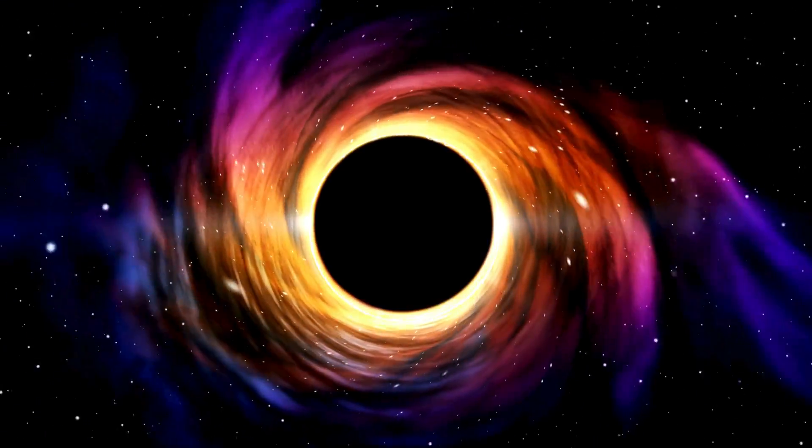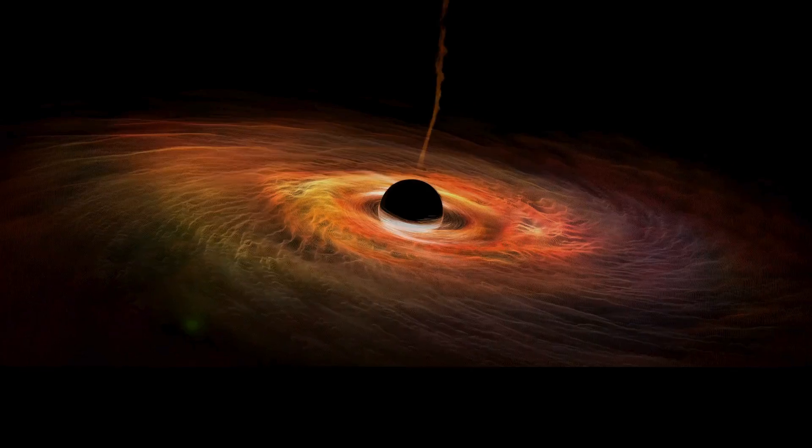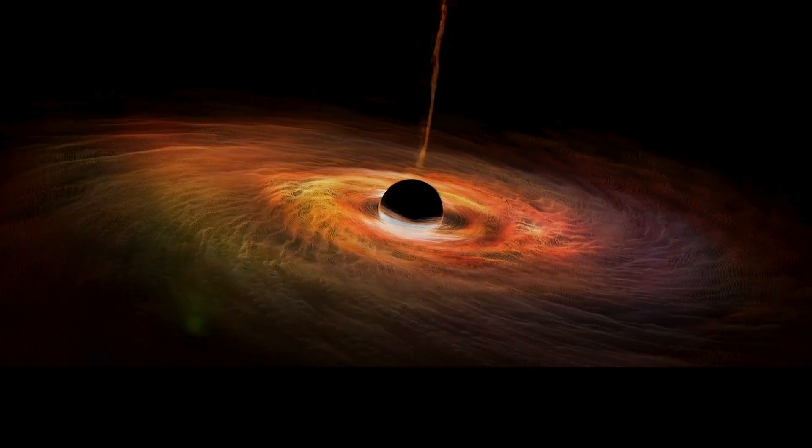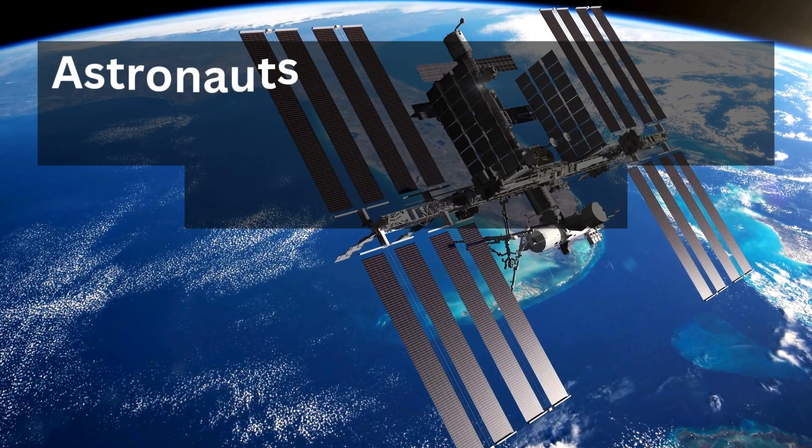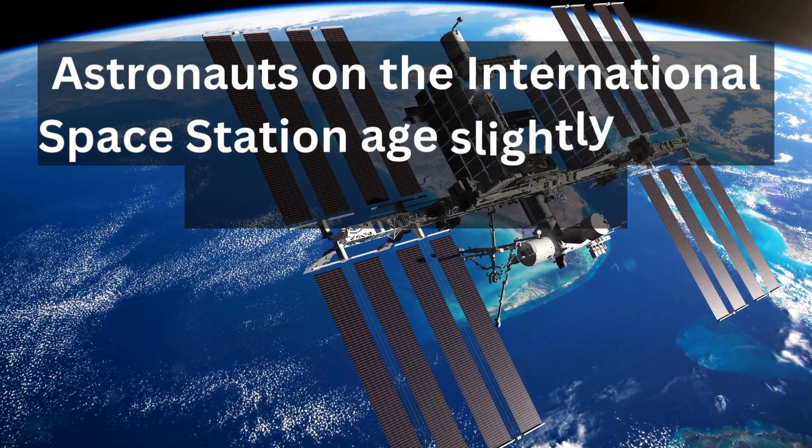Imagine space-time as a fabric. Massive objects like stars and planets warp this fabric. Near these massive objects, time slows down. This is why astronauts on the International Space Station age slightly slower than those on Earth.